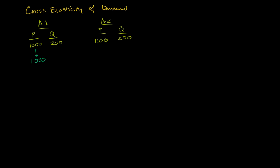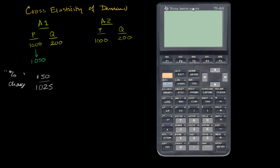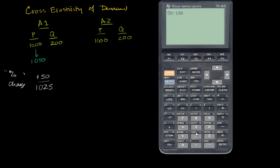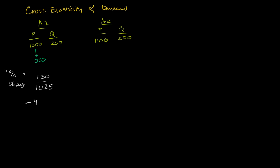So the percent change here — and I'll put it in quotes because it's a bit different from traditional percent change — is a $50 change in price. Our base is $1,025, which is the average of $1,000 and $1,050. That gives us 50 divided by $1,025, which equals roughly 4.9%. We do this so that going from $1,050 down to $1,000 would also register as a 4.9% decrease, using the midpoint as the base.